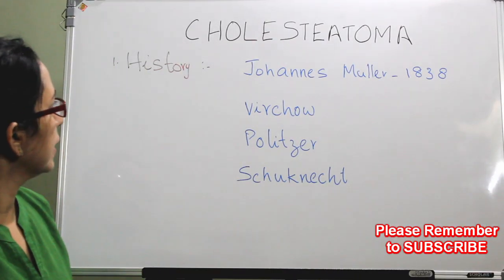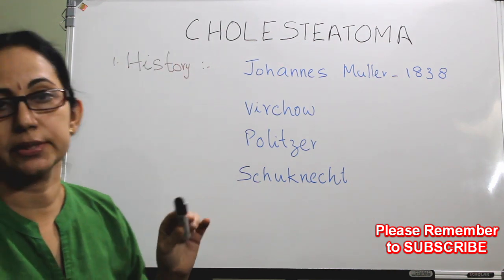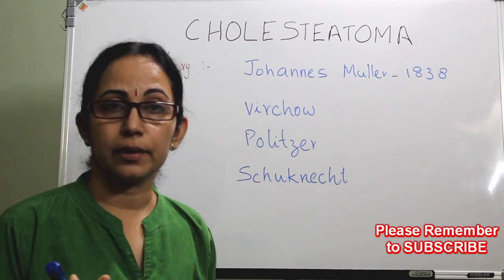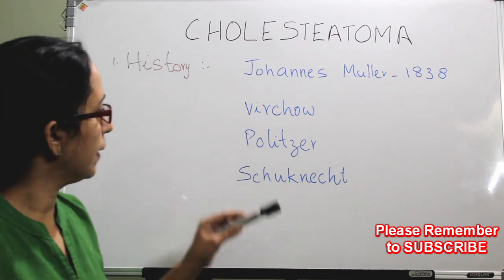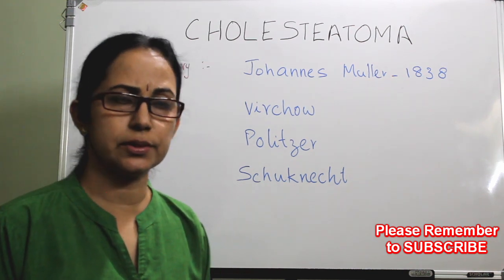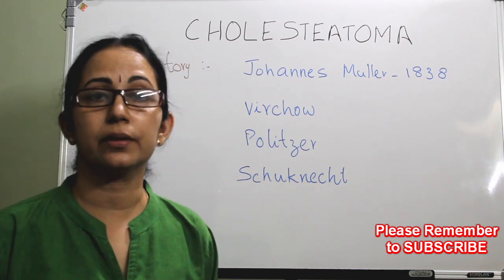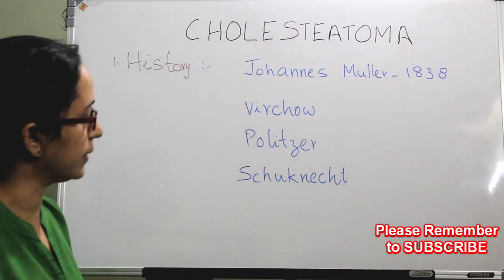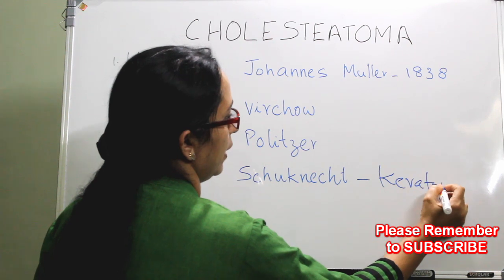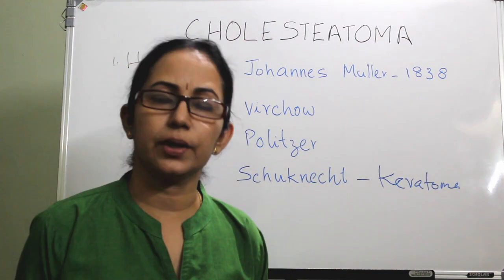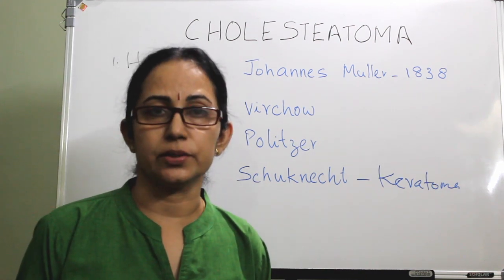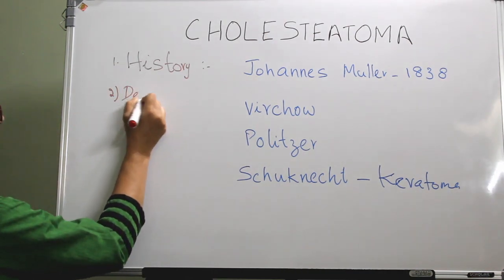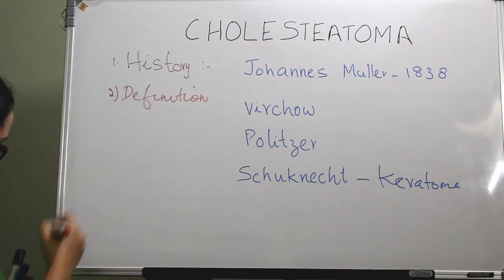The term was coined by German physiologist Johannes Müller. Later, Virchow defined it as a tumor of mesenchymal cells. Polypza described it as a glandular neoplasm of the middle ear mucosa. Shukhnecht defined it as a keratoma — also called Shukhnecht's keratoma — which is a better terminology, because cholesteatoma is essentially a mass of keratin.